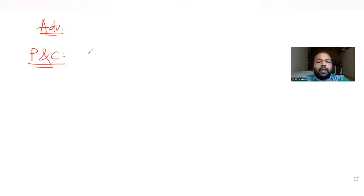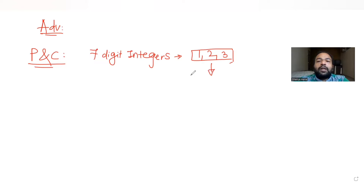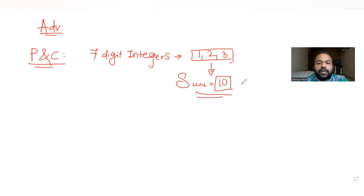The question tells us that we need to form seven-digit integers using the digits one, two, and three. We have also been given a condition that says the sum of the digits used to form the seven-digit integer should be equal to 10.